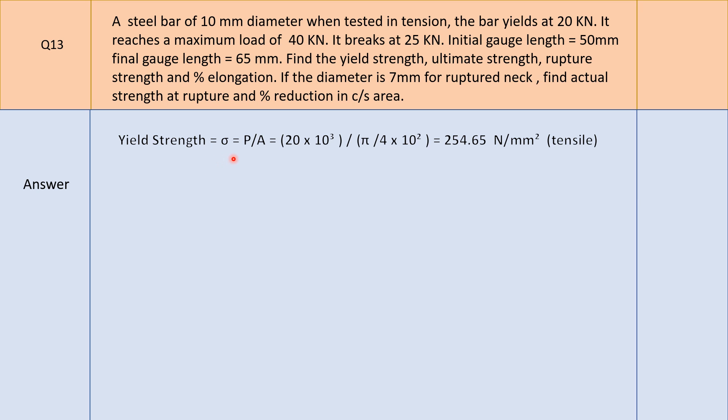For yield strength: sigma equals P upon A. The bar yields at 20 kN, so P is 20 into 10³ N. Area is pi by 4 into 10 squared. Calculating: (20e3) / (π/4 × 10²) gives 254.65 N/mm². The bar is tested in tension so the stress is tensile.